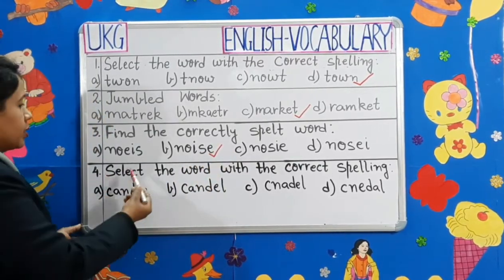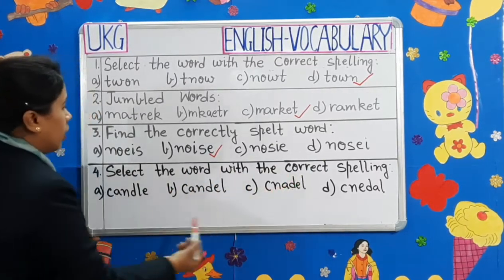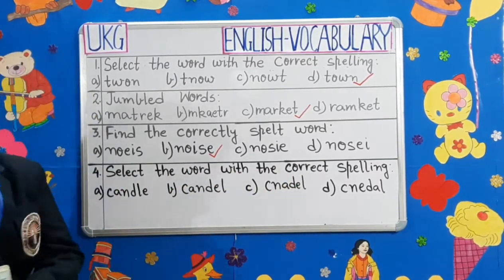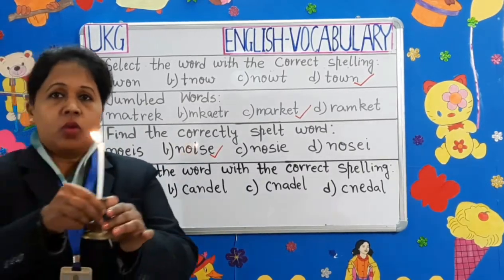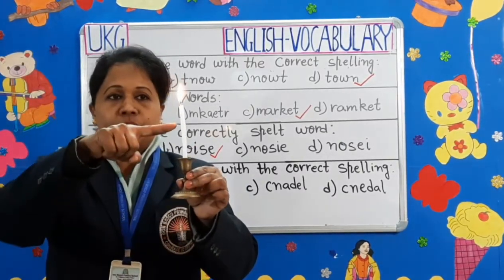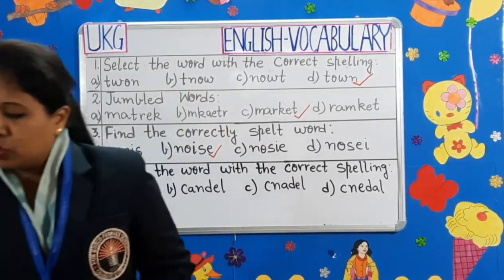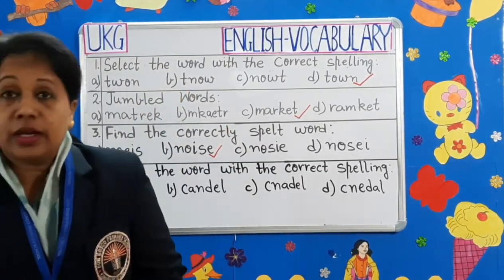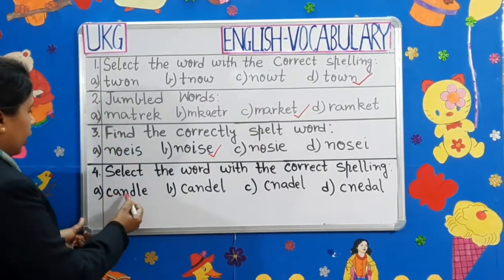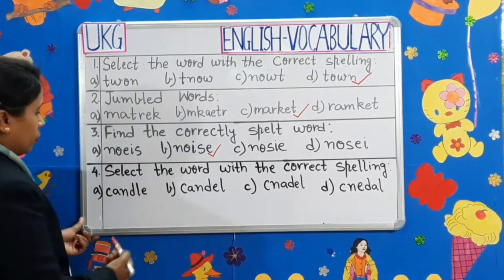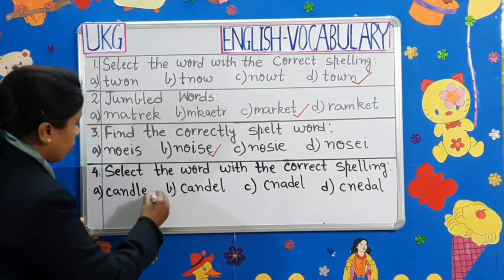Question 4: Select the word with the correct spelling. Options are given. Children, can you tell me what is it? It is a candle. So, let's choose the correct spelling of candle — C-A-N-D-L-E. Candle. So, we will put a tick on it.